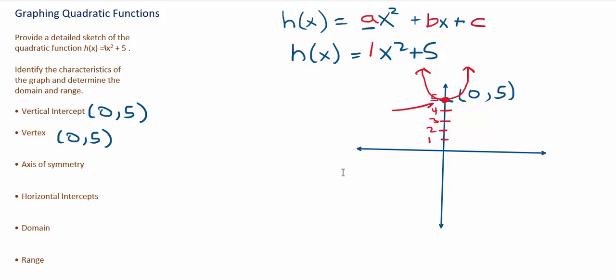Notice that the graph starts above the horizontal axis here and opens up. If (0, 5) is the smallest point on the graph and it's above the horizontal axis, this means the graph is never going to cross the horizontal axis. So this is a case where there are no horizontal intercepts. I'm just going to write none, or DNE, for the fact that the horizontal intercepts do not exist.